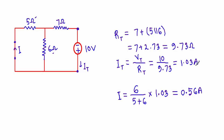Dividing the total voltage by total resistance: 10 divided by 9.73 gives a total current of 1.03 ampere. This is the current outgoing from the source. After that, I calculate the current through the branch containing the 5 ohm resistance using the current divider rule: I take the resistance of the opposite branch — 6 ohm — divide by the sum of 5 plus 6, and multiply by the total current 1.03. This gives the current through this path equal to 0.56 ampere.